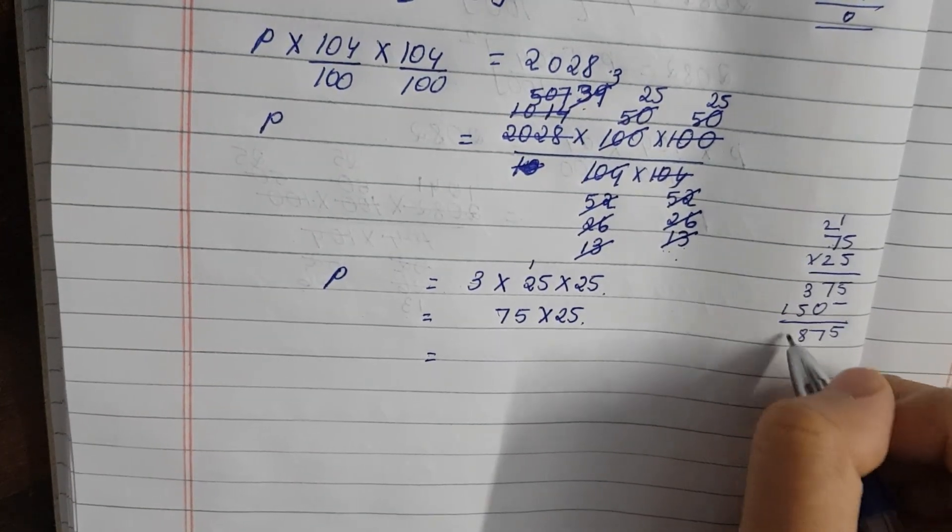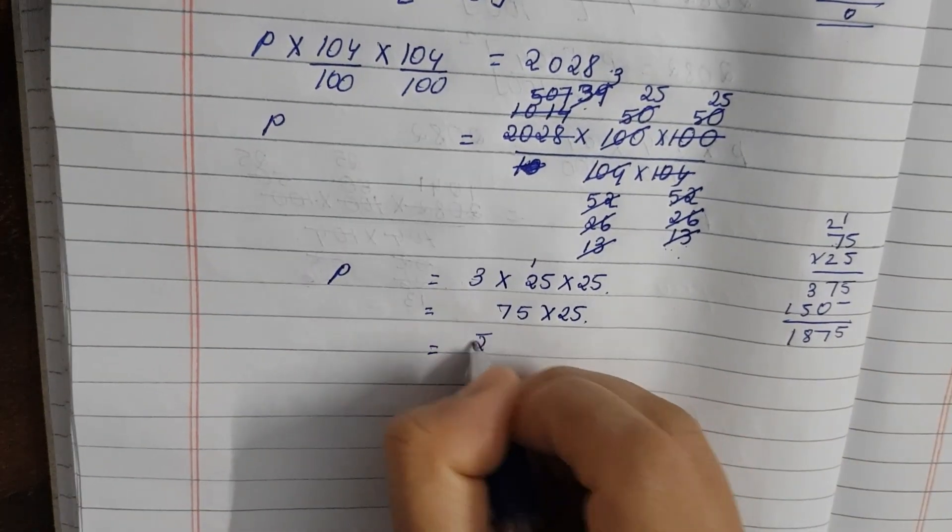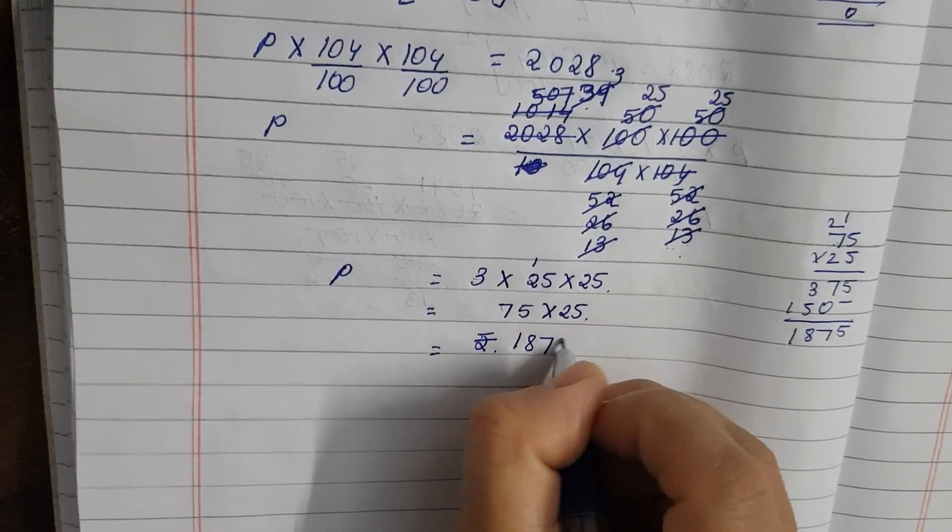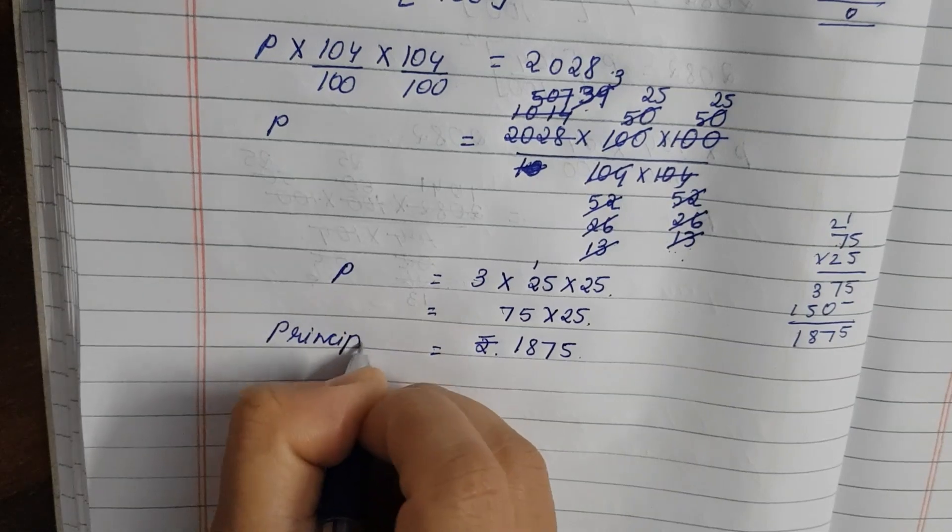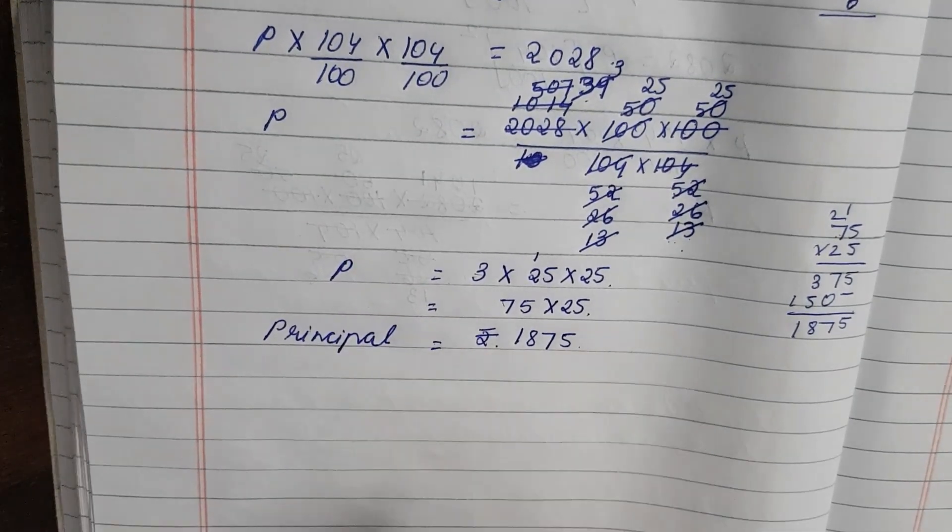So that, but now 5, 7, 8 and 1. So it is rupees 1875. So the principle is rupees 1875.